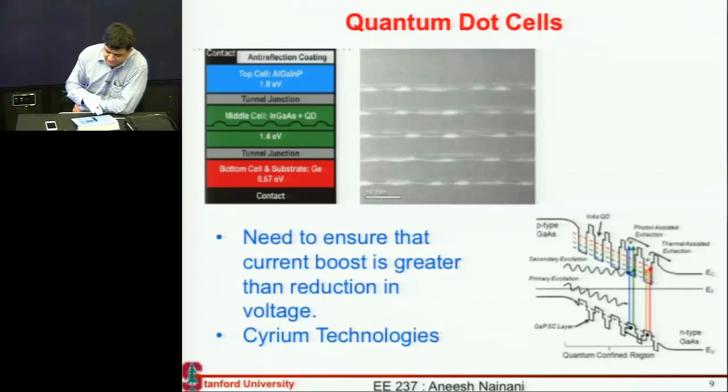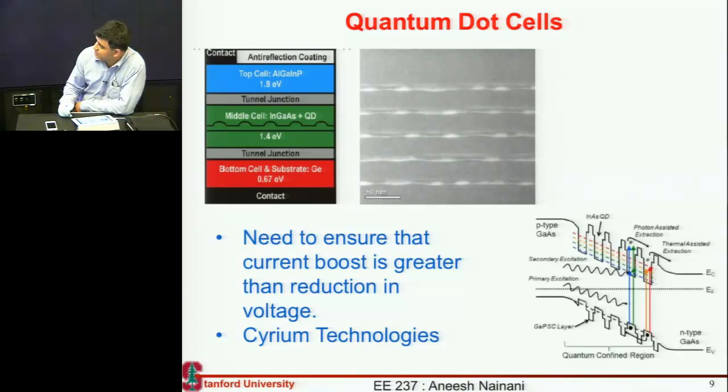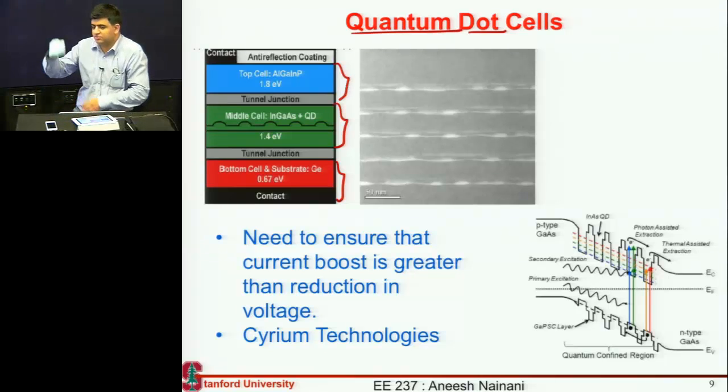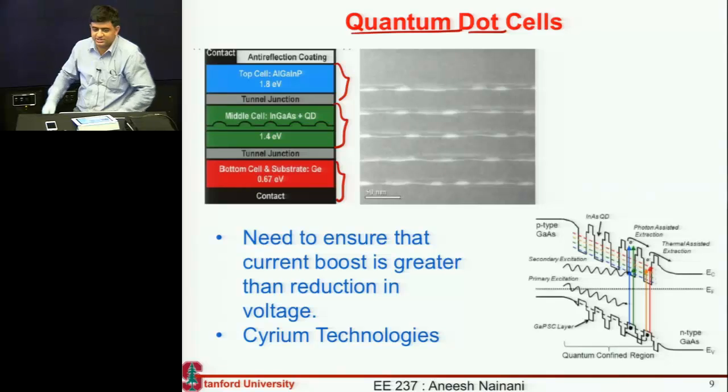So as you guys expected, the place where these quantum well or quantum dot cells are most commonly used is for multi-junction cells and they're used to essentially tune the bandgap of one of these cells where you can't tune it by lattice matching. Because when you're making these multi-junction cells your hands are tied because you have to grow all these lattice-matched materials and you can't get the optimal bandgap.